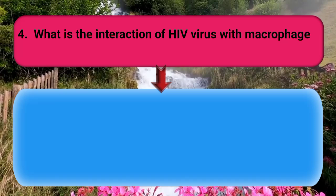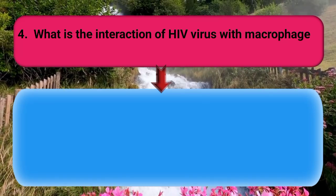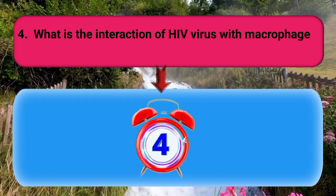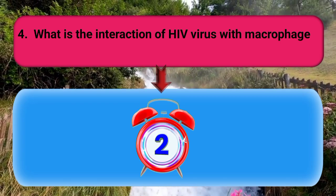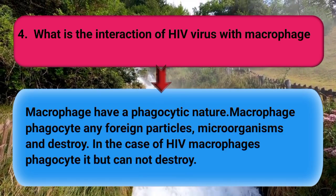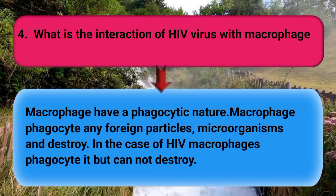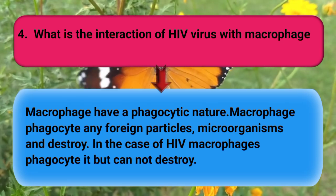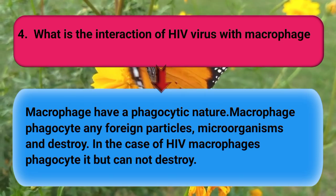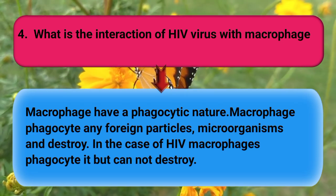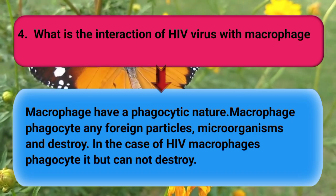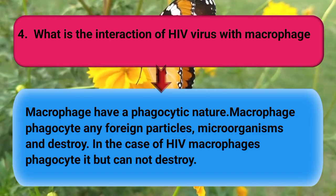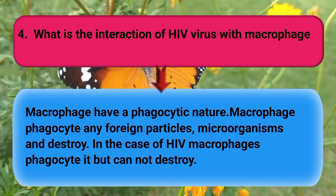What is the interaction of HIV virus with macrophages? Macrophages have a phagocytic nature; they phagocytose any foreign particles and microorganisms and destroy them. However, in the case of HIV, macrophages phagocytose it but cannot destroy it.